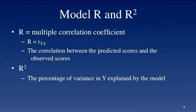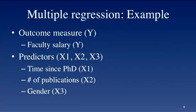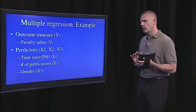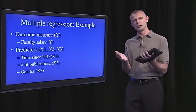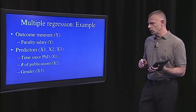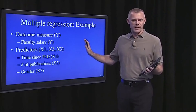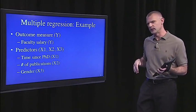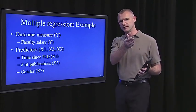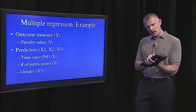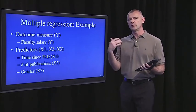The way to get the model R is to look at the correlation between the observed scores and the predicted scores — Y-hat — and then square that to get the percentage of variance in Y explained by the model. I'm going to walk through this example conceptually. This is a faculty salary example — we're going to predict faculty salary not from one predictor but from multiple predictors.